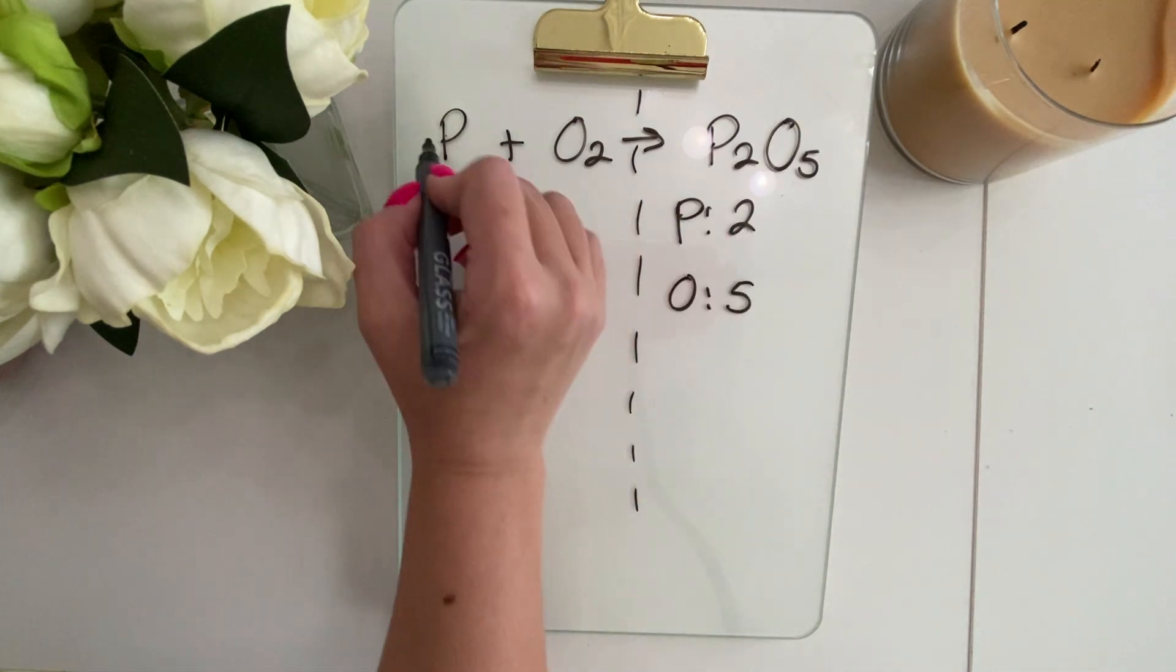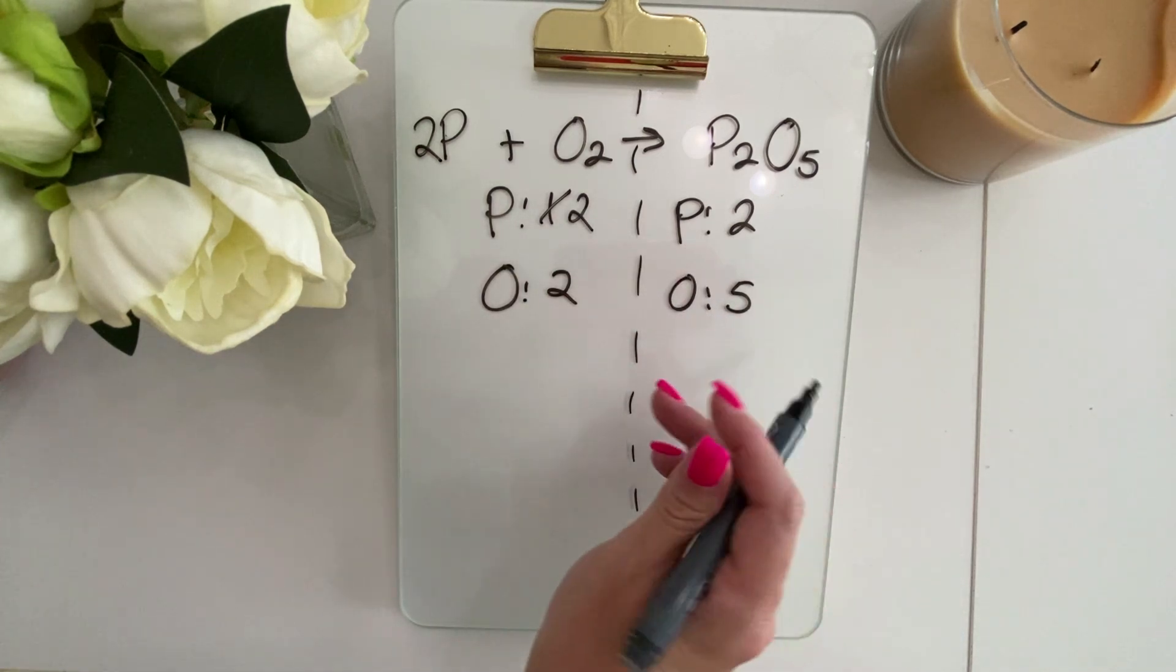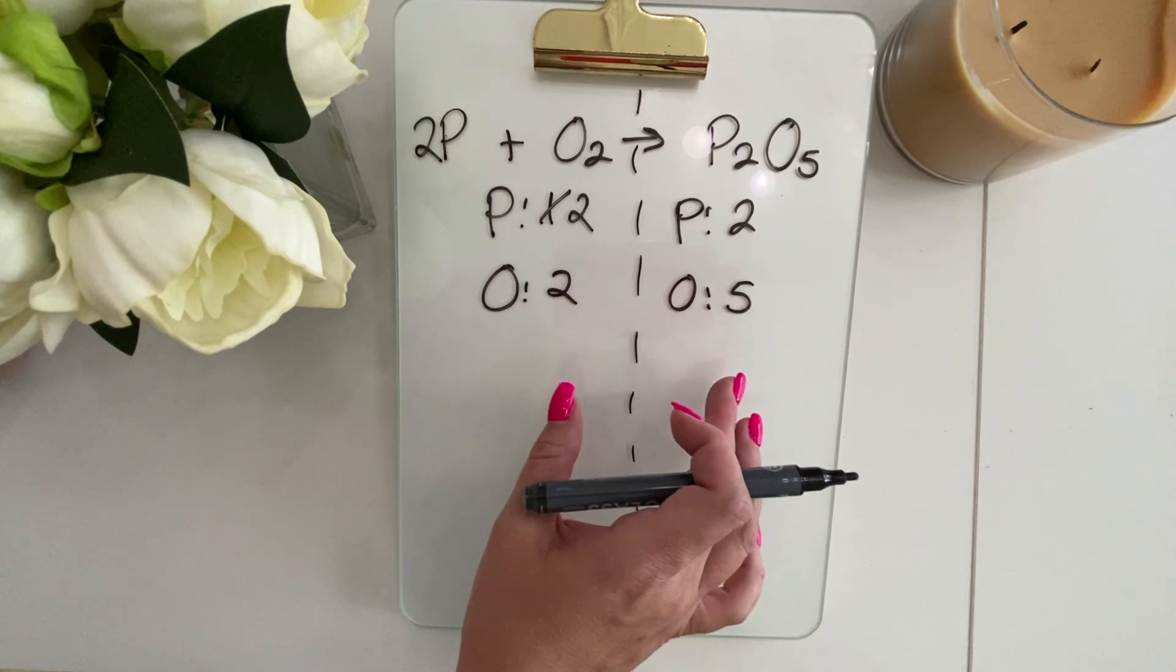We need this one to be a two so we can easily put a coefficient of two. Now we need to focus on our oxygen. You can tell we have one even and one odd number. When that happens,